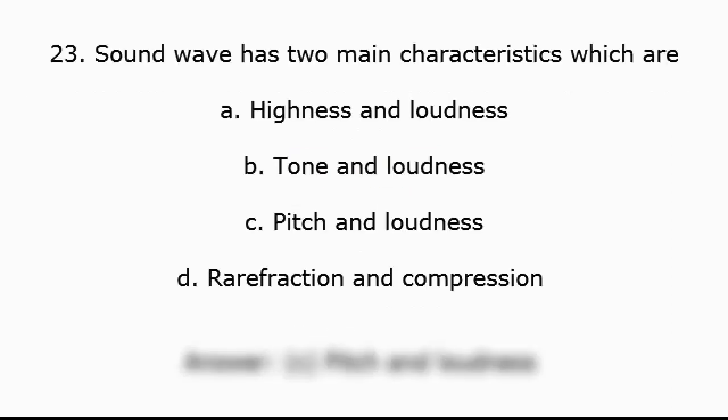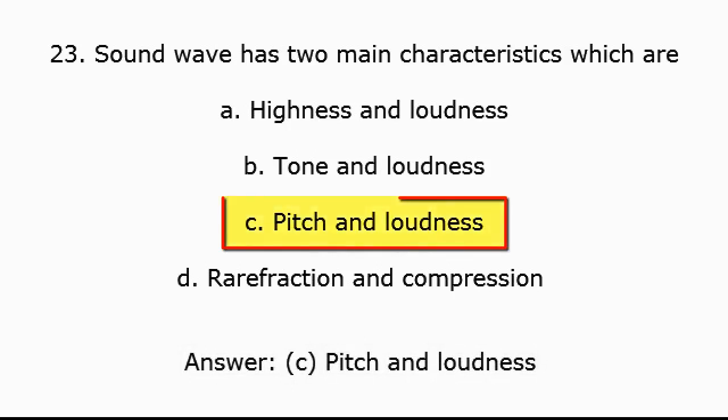Question 23: A sound wave has two main characteristics, which are: A. Highness and loudness, B. Tone and loudness, C. Pitch and loudness, D. Rarefaction and compression. Answer: C. Pitch and loudness.